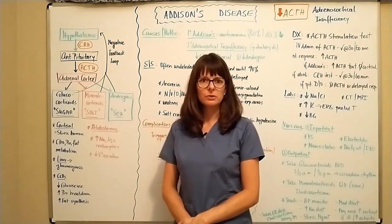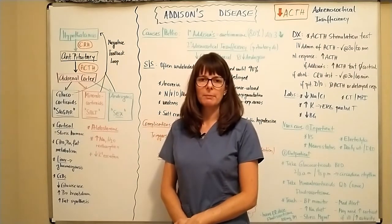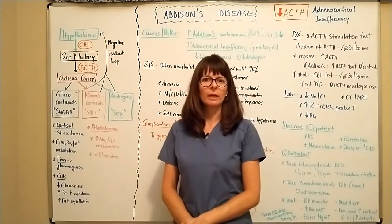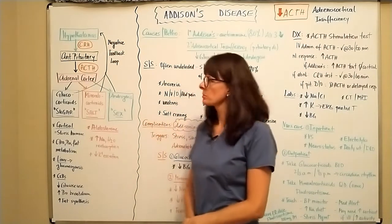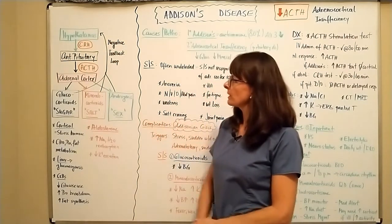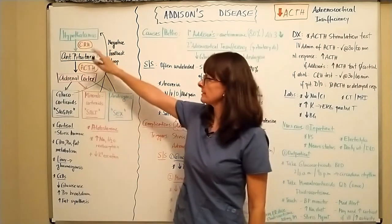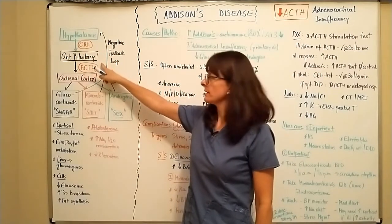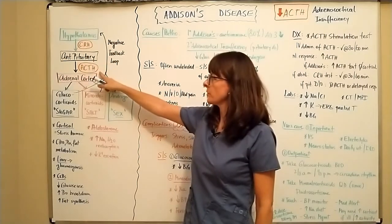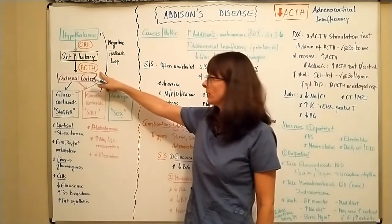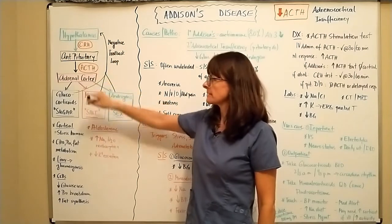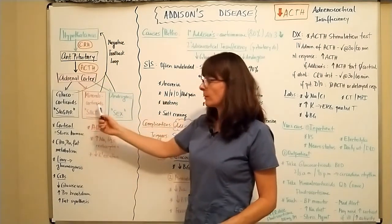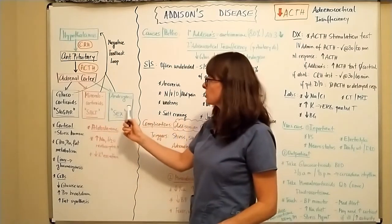But before we look into the details, let's review the hypothalamic pituitary and adrenal axis and how it regulates our hormones. So the hypothalamus releases corticotropin-releasing hormone that stimulates the anterior pituitary to release ACTH or adrenocorticotropic hormone. That hormone stimulates the adrenal cortex to release glucocorticoids, mineralocorticoids, and androgens.